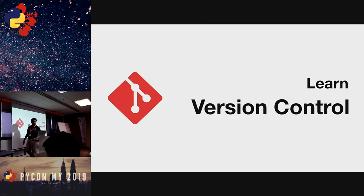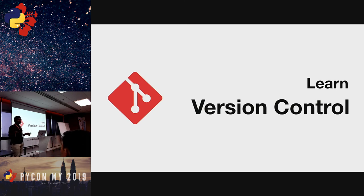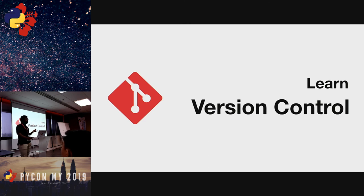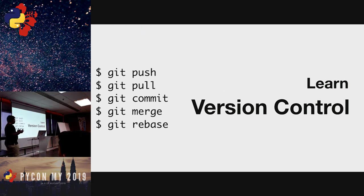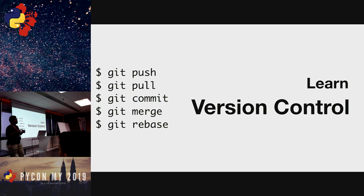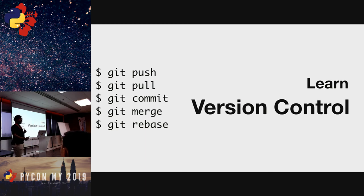Second tip: learn version control. This is super important, not just for open source projects but for company projects and research projects as well. Version control ensures you know what happened to your code — you can undo changes, keep track of all changes, and know what happened when. You don't have to be a guru who knows all Git commands. Just simple git push, pull, commit, merge, and rebase — especially merge and rebase, which can be a bit difficult. If you're suffering from merge conflicts and rebase problems, I suggest using a graphical tool like a diff checker. Since JetBrains is sponsoring us, you could use PyCharm — it has a fantastic way of resolving conflicts.